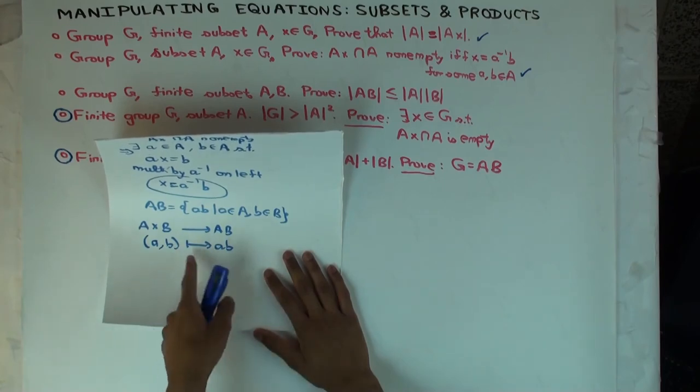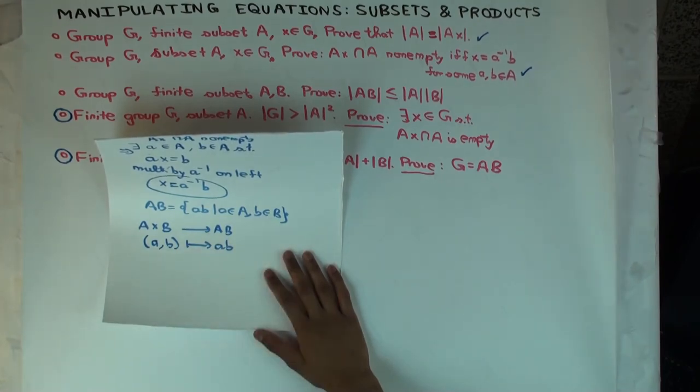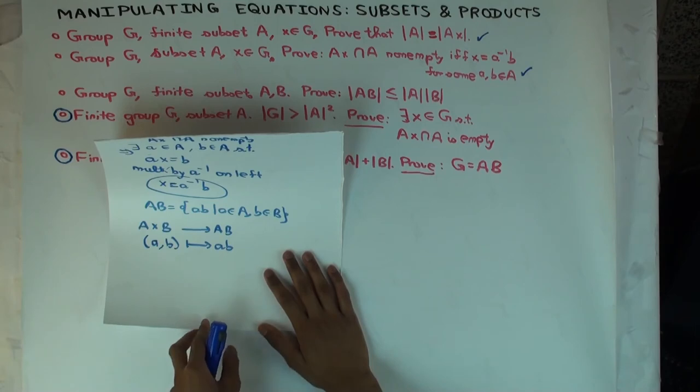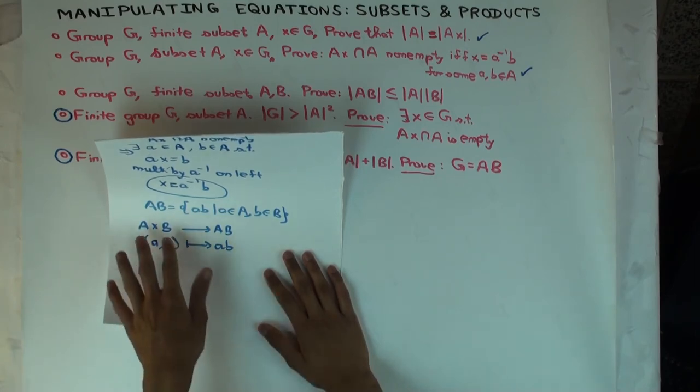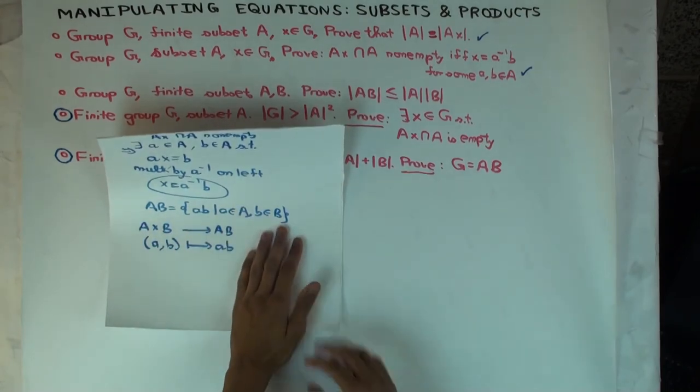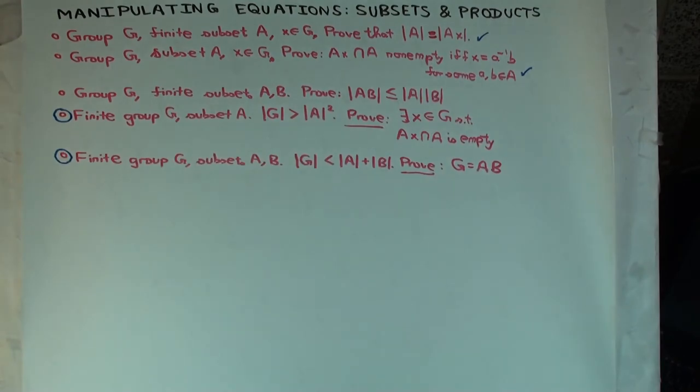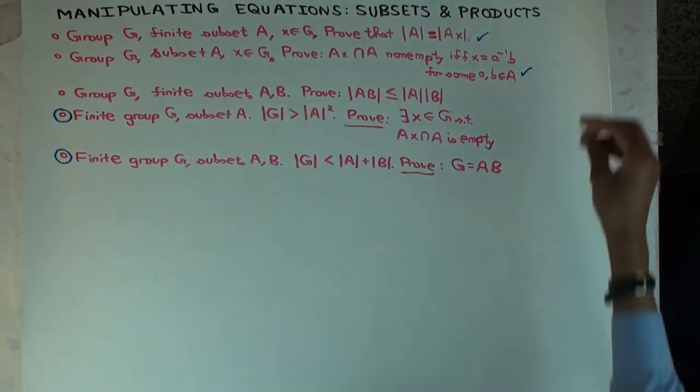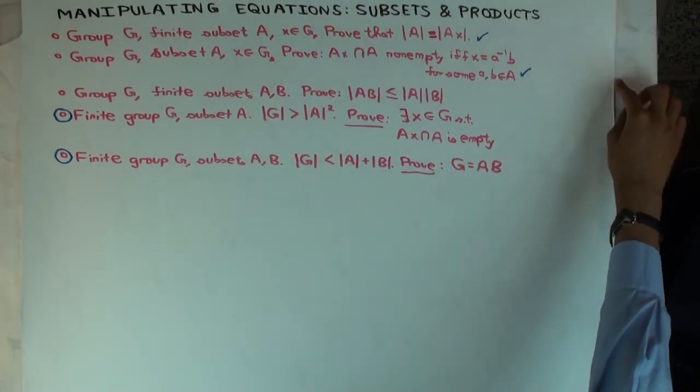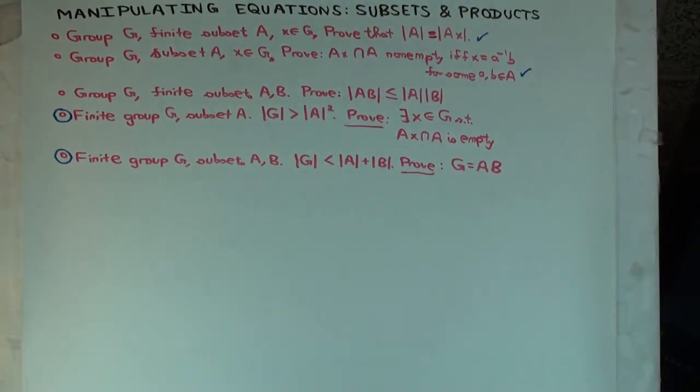Is it surjective? Yes, because that's the definition of AB. So you have a surjective map from this set to this set. What does that tell you about the sizes of the two sets? The size of the first one must be greater than or equal to. If it's actually injective as well, there will be a bijection, there will be equal, but it could be strictly greater. So does that give you this? Yeah, because mod A times mod B is just the size of A cross B.